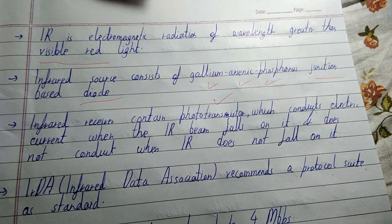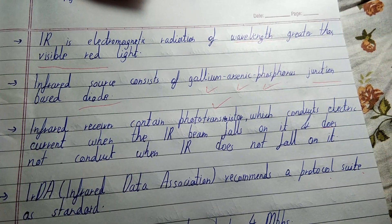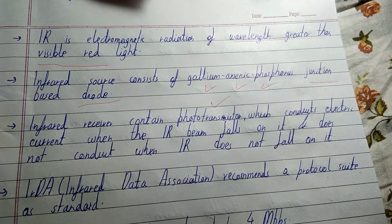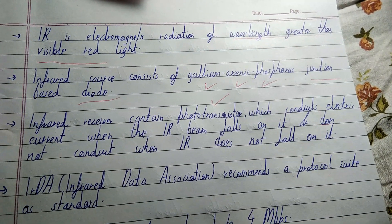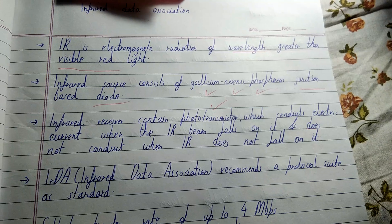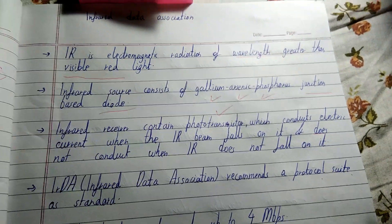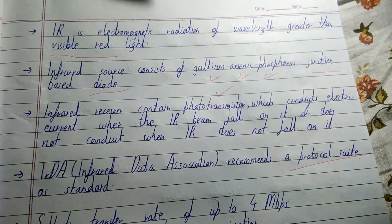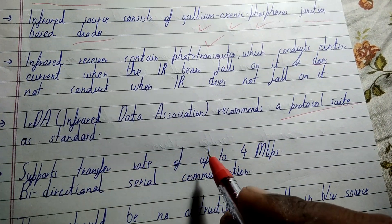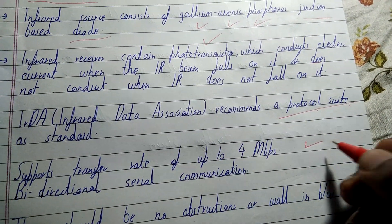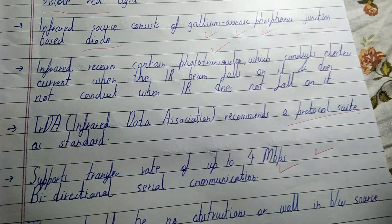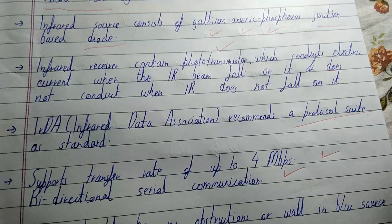IRDA, or infrared data association, recommends a protocol suite — a set of rules — as a standard for using infrared radiation. It supports a transfer rate of up to 4 Mbps, which is a good speed. Secondly, it is bi-directional serial communication, so you can both send and receive data.